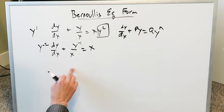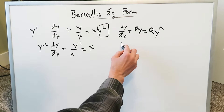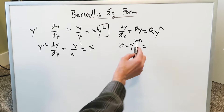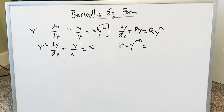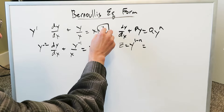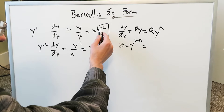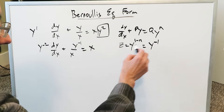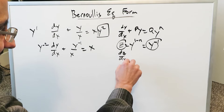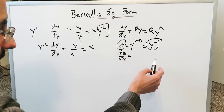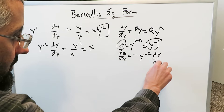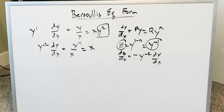You have to think back to the two substitutions which come into play. One is: z is always equal to y to the power of 1 minus n. What's n? Here n is 2, so you'll do y to the power of 1 minus 2, which is y to the minus 1. Now take the derivative of both sides: dz over dx equals, by the power rule, minus y to the minus 2 dy over dx.